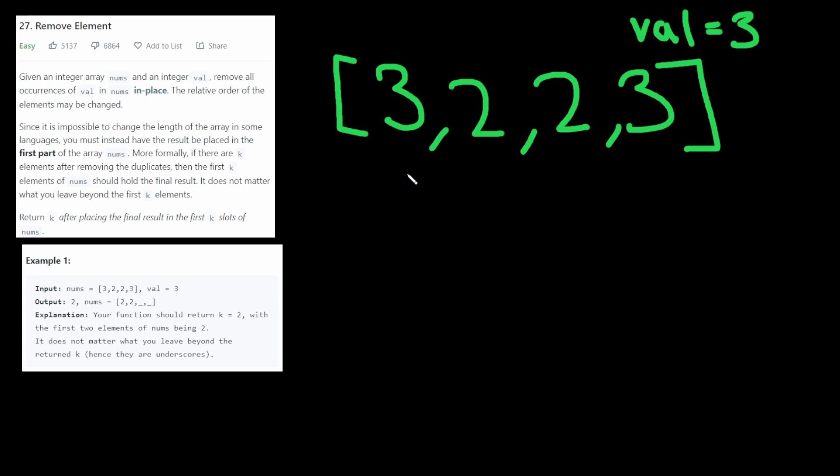Okay, so this is similar to the remove elements from sorted array algorithm. The basic idea is that we have two pointers. One pointer goes through the entire array as normal, so it goes through all the elements. And the other pointer points at the place we're going to insert elements that do not match the val.